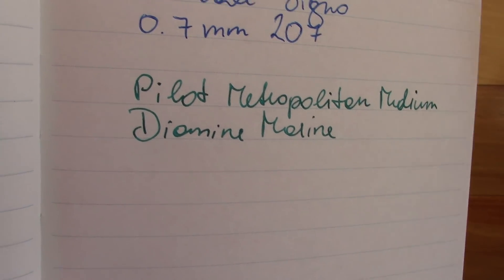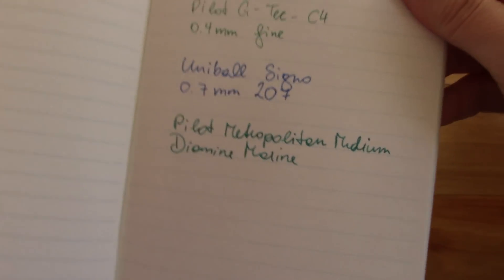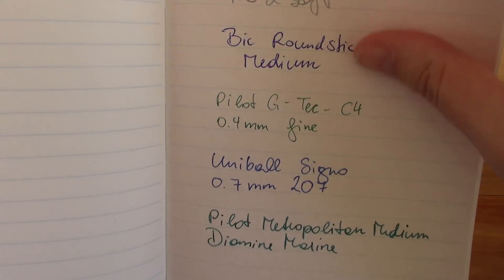So this paper is absolutely amazing for fountain pens. I actually love using a fountain pen with Tomoe River paper. And it handles all the other pens really nicely as well. It gives you a really nice, smooth writing experience. And the only thing is, of course, because it is so thin...